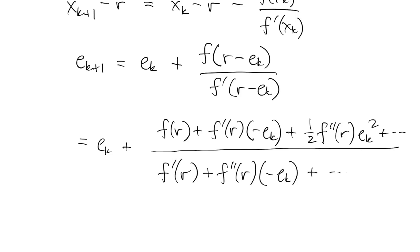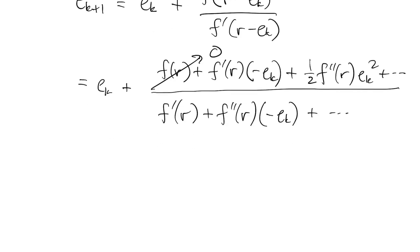So we apply Taylor's theorem to f prime. In this case I only need to keep two terms, it turns out. So in the numerator the first term is zero because r is a root.